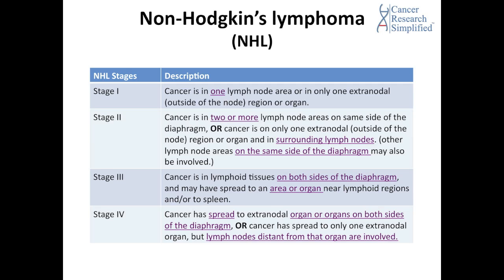At Stage 3, cancer is in lymphoid tissues on both sides of the diaphragm and may have spread to an area or organ near lymphoid regions and/or to the spleen. At Stage 4, cancer has spread to extranodal organs on both sides of the diaphragm, or cancer has spread to only one extranodal organ but lymph nodes distant from that organ are involved.